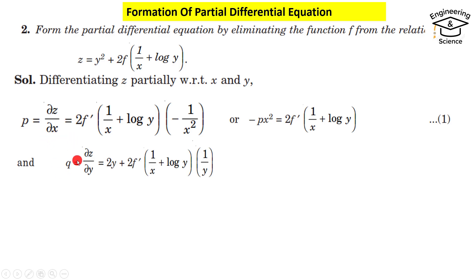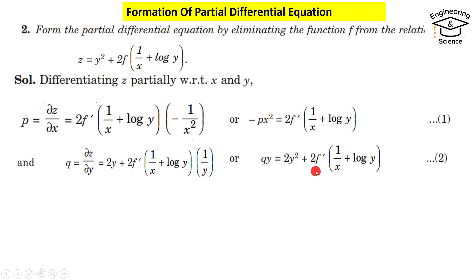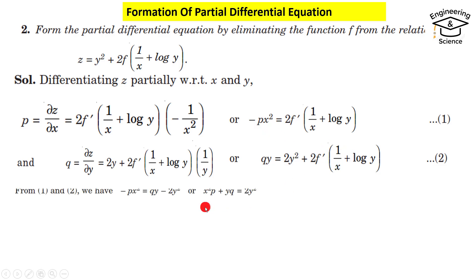Differentiating with respect to y, we get 2y plus 2f prime of (1 over x plus log y) times 1 over y. Multiplying both sides by y gives equation two. From equation one, we know 2f prime of (1 over x plus log y) equals minus px squared. Substituting this into equation two, we get the partial differential equation.